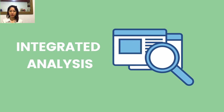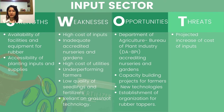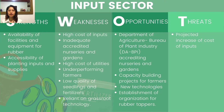For the SWOT analysis of the input sector, the strength is the availability of rubber facilities, equipment, and supplies, made possible through government initiatives such as the Department of Agriculture's distribution of rubber nurseries producing high-quality seedlings. Weaknesses include the inaccessibility of inputs such as seeds, fertilizer, labor, and technology for smallhold farmers, primarily due to limited financial capacity. An opportunity is the plans and programs by different agencies to increase productivity by providing quality seedlings, high-performing laborers, and advanced technology. The threat is the continuous increase in price of inputs, directly impacting price-sensitive smallhold farmers.